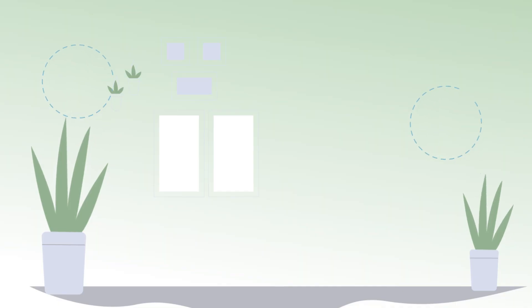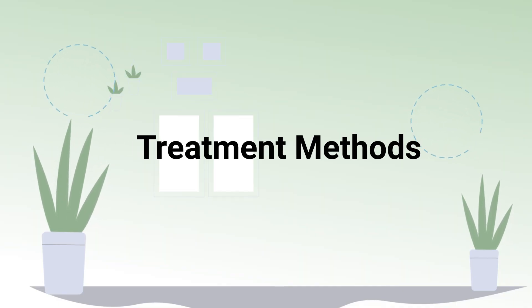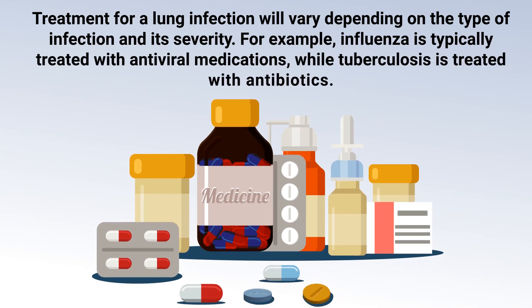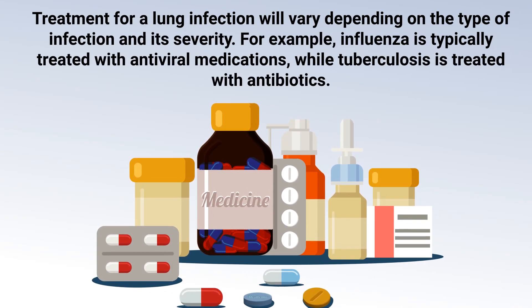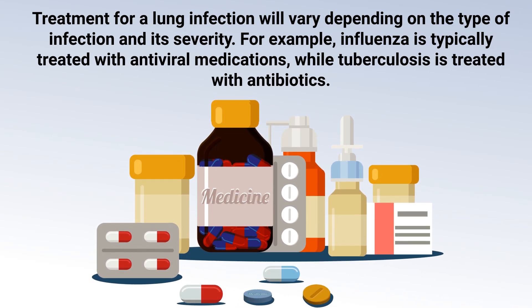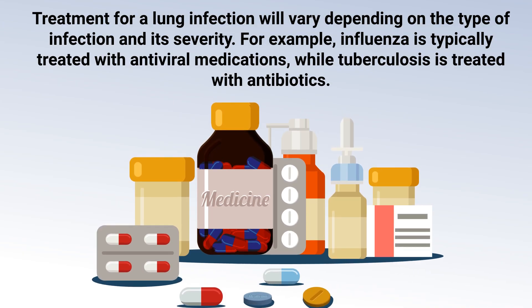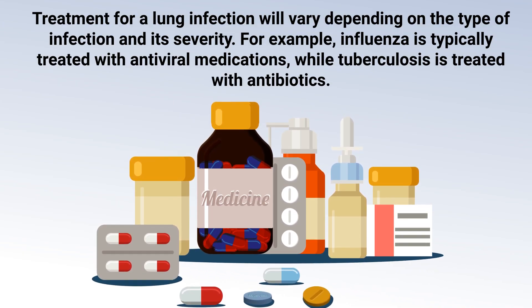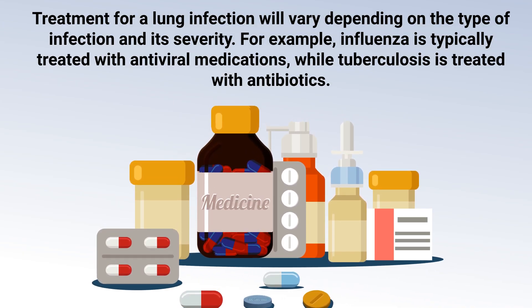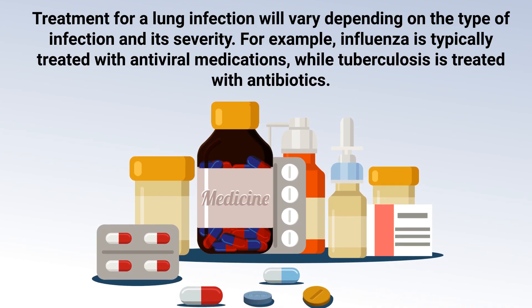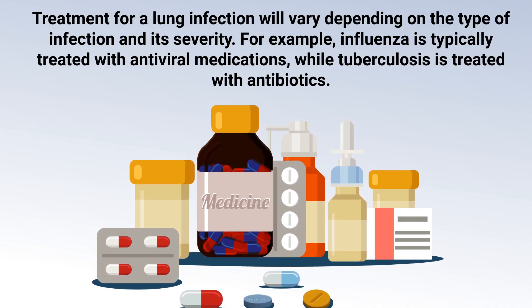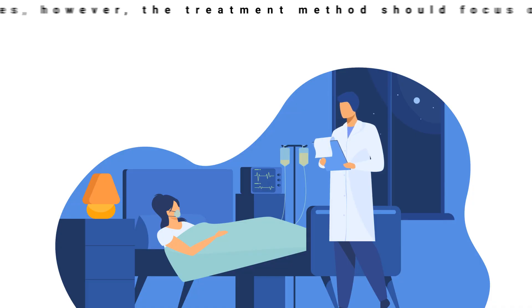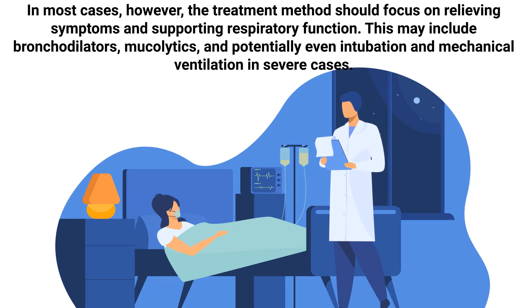Now let's talk about treatment methods. Treatment for a lung infection will vary depending on the type of infection and its severity. For example, influenza is typically treated with antiviral medications, while tuberculosis is treated with antibiotics.